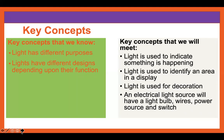Here are some key concepts that we know: light has different purposes, and lights have different designs depending upon their functions. Concepts we will meet today are: light is used to indicate something is happening; light is used to identify an area in a display; light is used for decoration; and an electrical light source will have a light bulb, wires, a power source, and a switch.